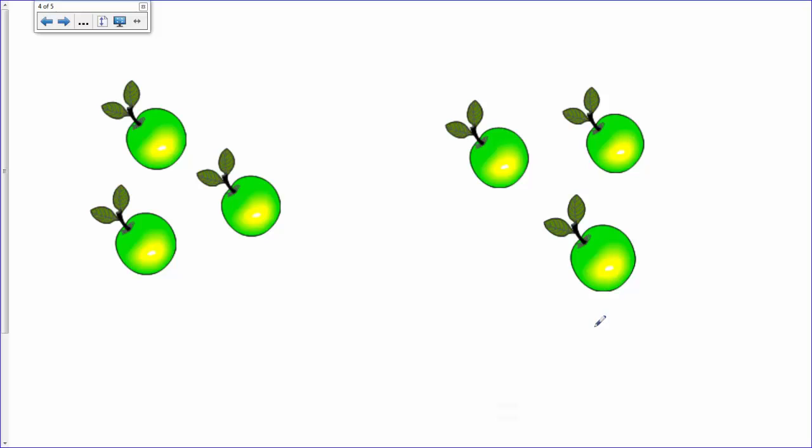These two groups are the same. There are three in this one, and three in this one. So, we have two groups of apples, and there are three apples in each group.